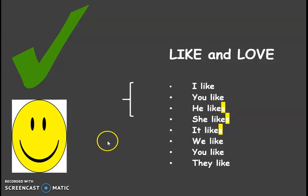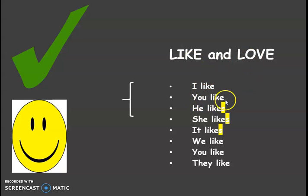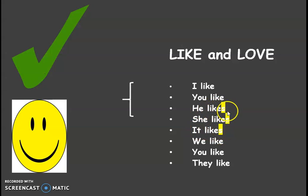What food do you like? I like — and it could be I love — I like cheese. You like potatoes. For the third person singular, which is he, she, and it, you need to put an S on the verb. So, he likes tomatoes. She likes pizza. It likes bread.